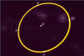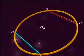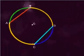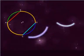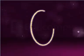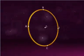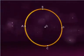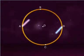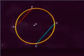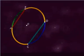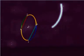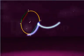In a circle, if two chords are equal, then their corresponding arcs are congruent. That is, in a circle with center O, if chord AB is equal to chord CD, then arc AB is congruent to arc CD.